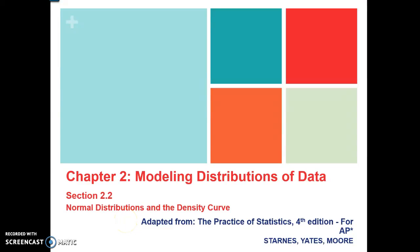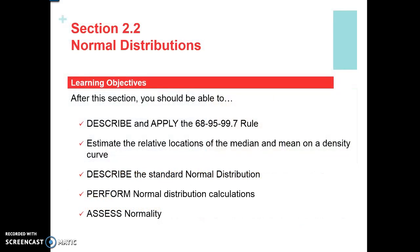Welcome to section 2.2 where we're going to take a look at normal distributions and the density curve. We briefly mentioned the density curve in the last section, but we're going to take a more in-depth look. This is going to be broken down into three recordings. The first will cover general normal distributions, the second the empirical rule, and the third how to prove whether a distribution is approximately normally distributed.